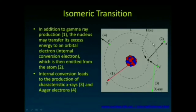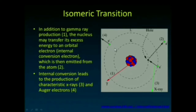Once that K-shell electron is gone, characteristic X-ray production can occur, where an L-shell electron comes in to fill that slot and gives rise to a characteristic X-ray. Alternatively, this energy difference can be imparted to an outer shell electron, producing Auger electrons. But in isomeric transition, the main event is the production of the gamma ray.